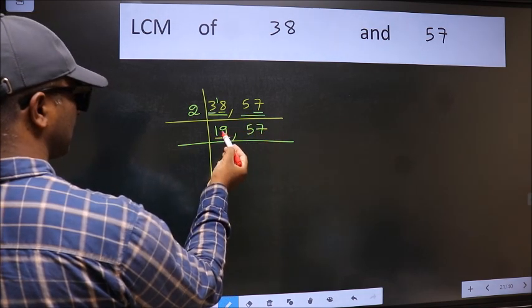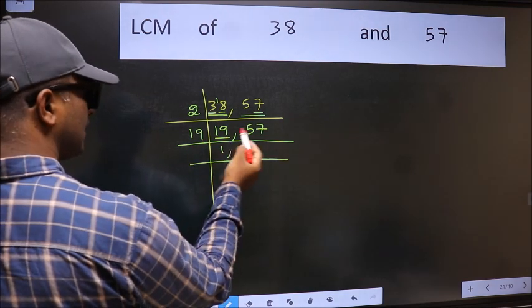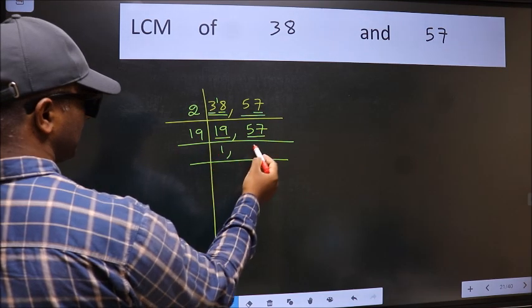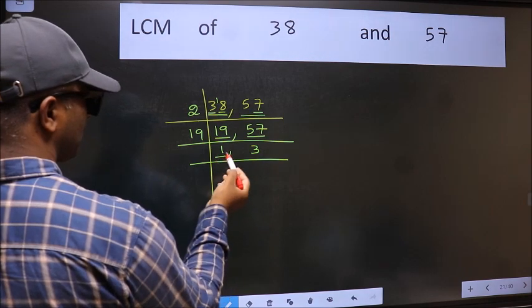Now here we have 19. 19 is a prime number, so 19 times 1 is 19. The other number 57, when do we get 57 in 19 table? 19 times 3 is 57. Now we got 1 here.